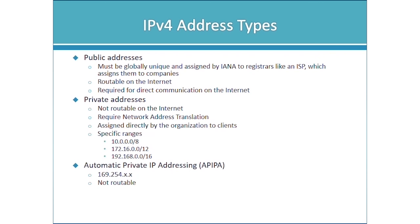Public addresses are globally unique addresses assigned by the IANA to registrars like ISPs, which then assign them to companies. They are routable on the internet and required for direct internet communication. If you have a web server on a perimeter network, it needs a public address so internet clients can connect directly to it. Private addresses, on the other hand, are not routable on the internet and require Network Address Translation (NAT).